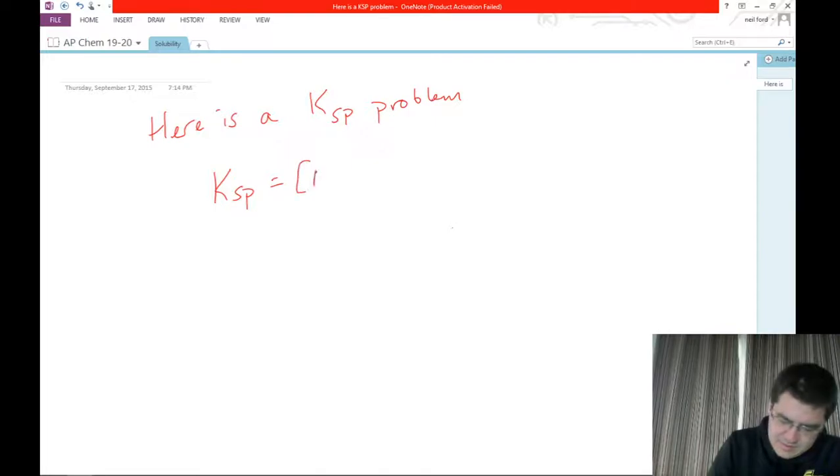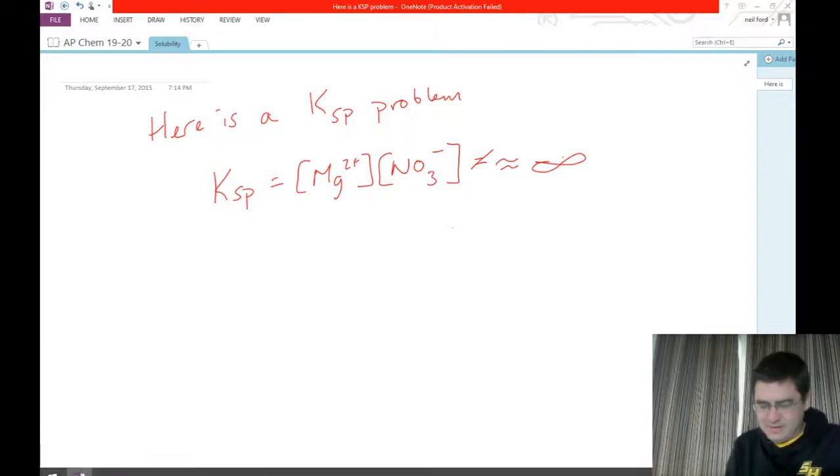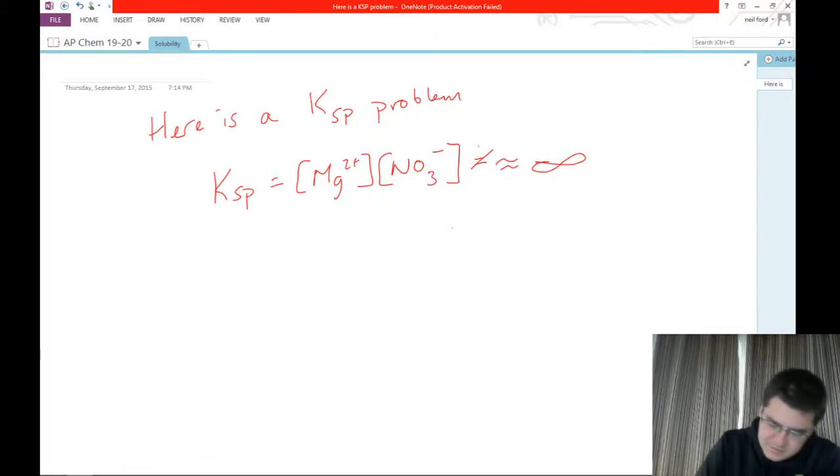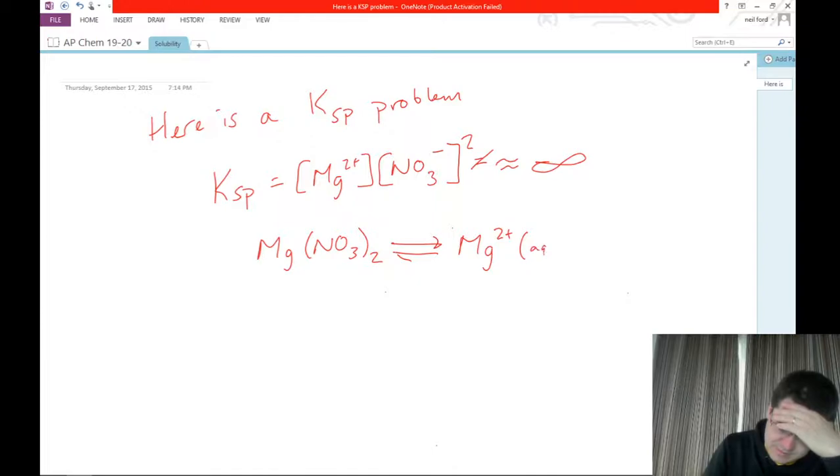KSP: Mg²⁺ [NO₃⁻] equals approximately infinite, and it should be that. Let's see, squared because Mg(NO₃)₂ in equilibrium: Mg²⁺ aqueous plus NO₃⁻, two of them.